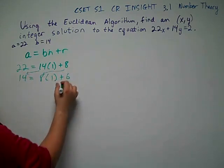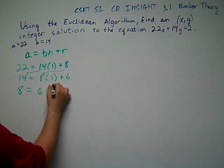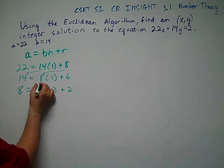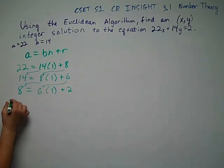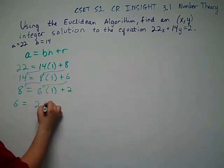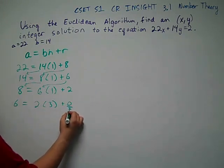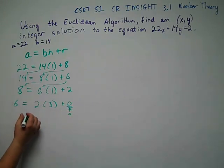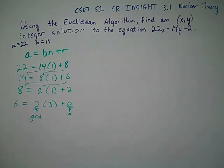Goes in once with a remainder of six. Goes in once with a remainder of two. Goes in three times with a remainder of zero. That confirms that the GCD is, in fact, two, which is pretty obvious between 14 and 22, but we still need to be able to show it.